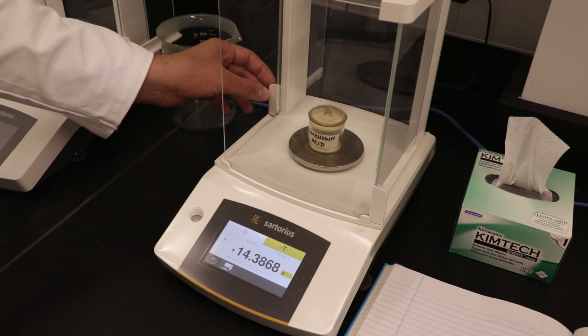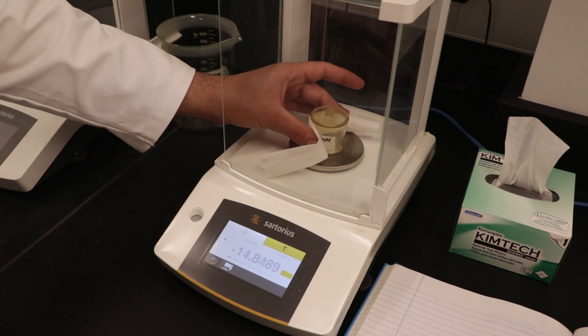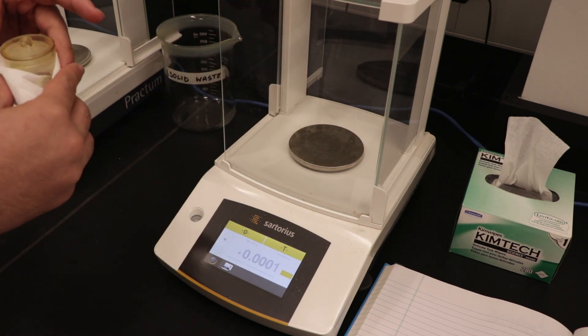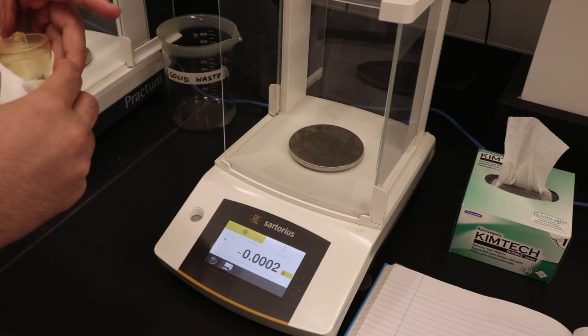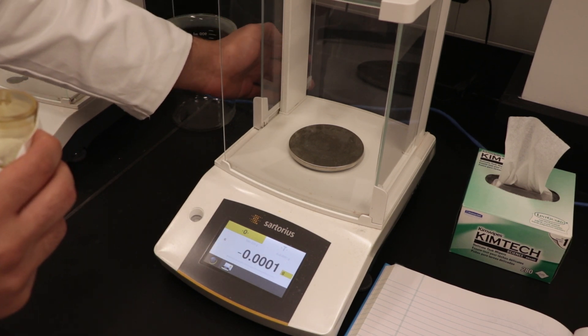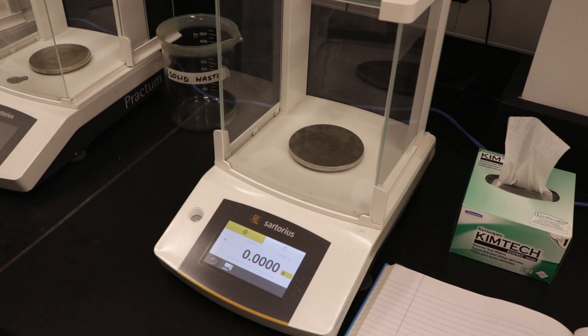Next, using a Kim Wipe, which can be found by the balances, carefully remove the weighing bottle. It is important to avoid direct contact with the weighing bottle at this point to prevent the transfer of any oils from your hand onto the bottle.